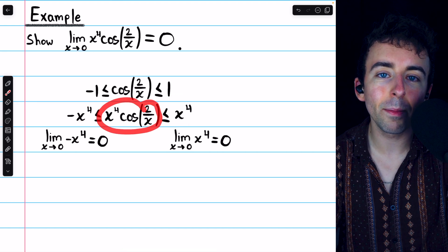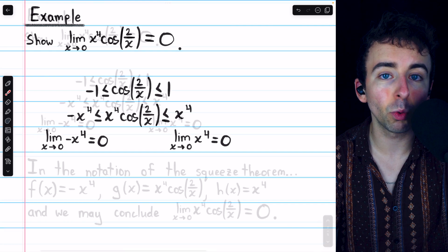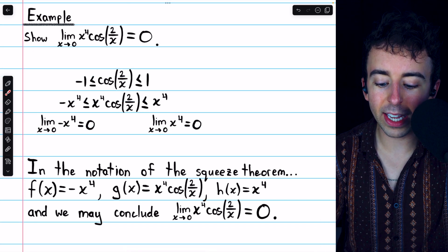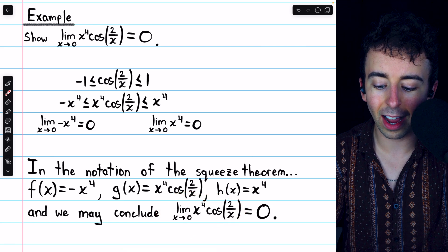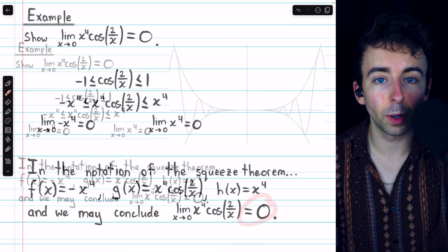Since these bounding functions have the same limit as x approaches 0, the function that's squeezed between them is forced to have that limit as well. And so, just as before, we can conclude that the limit of x⁴ times cos(2/x), as x approaches 0, is equal to 0.